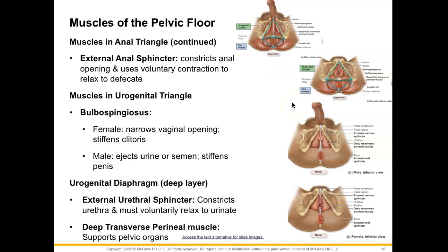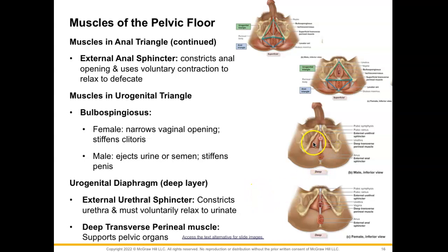Moving on to our urogenital diaphragm, which is a deeper layer, we have the external urethral sphincter in both males and females. This constricts the urethra and we have to voluntarily relax this muscle in order to urinate. The last muscle is the deep transverse perineal muscle, which supports our pelvic organs.